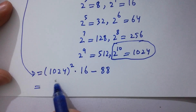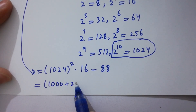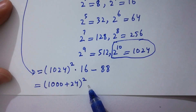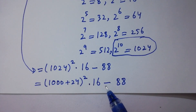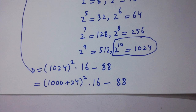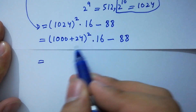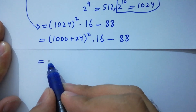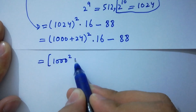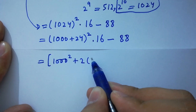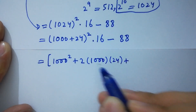Now 1024 can be written as 1000 plus 24, to the whole power 2, times 16, minus 88. Apply the formula of a plus b whole square, which is equal to a squared plus 2ab plus b squared. We have 1000 squared plus 2 times 1000 times 24 plus 24 squared.